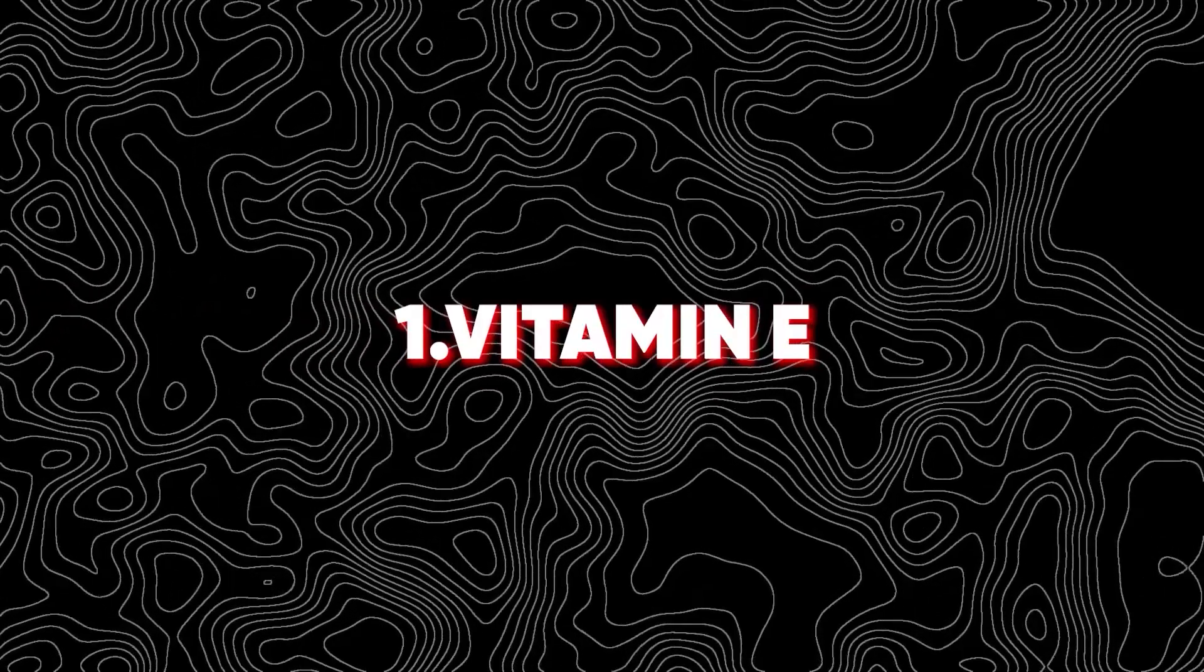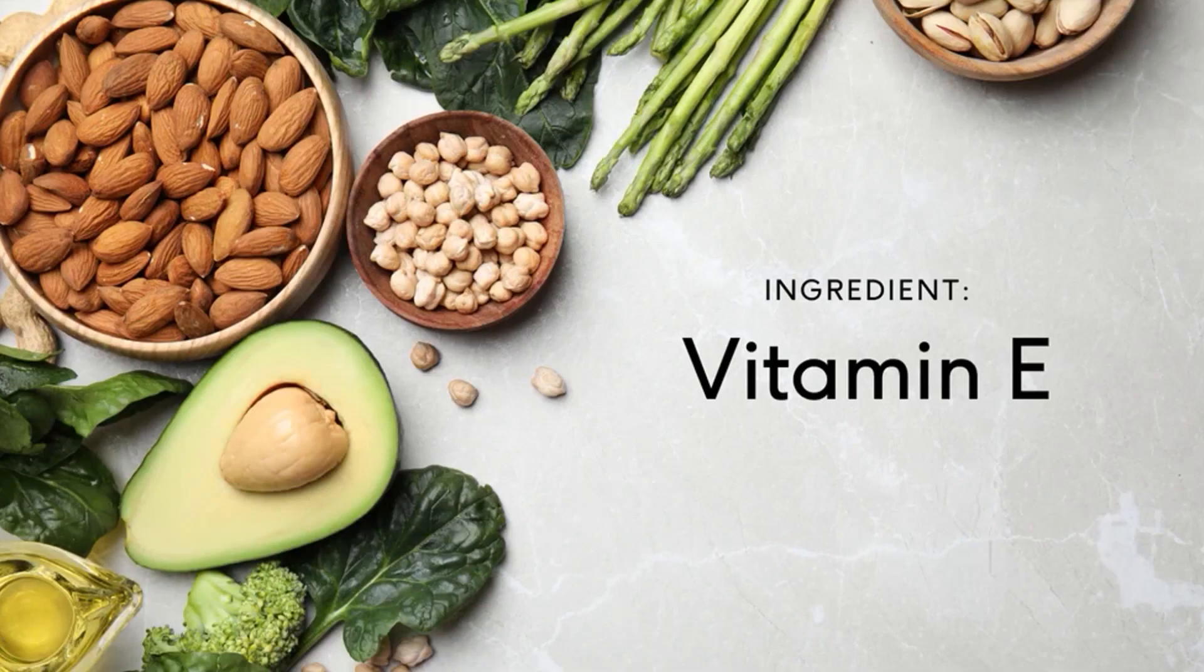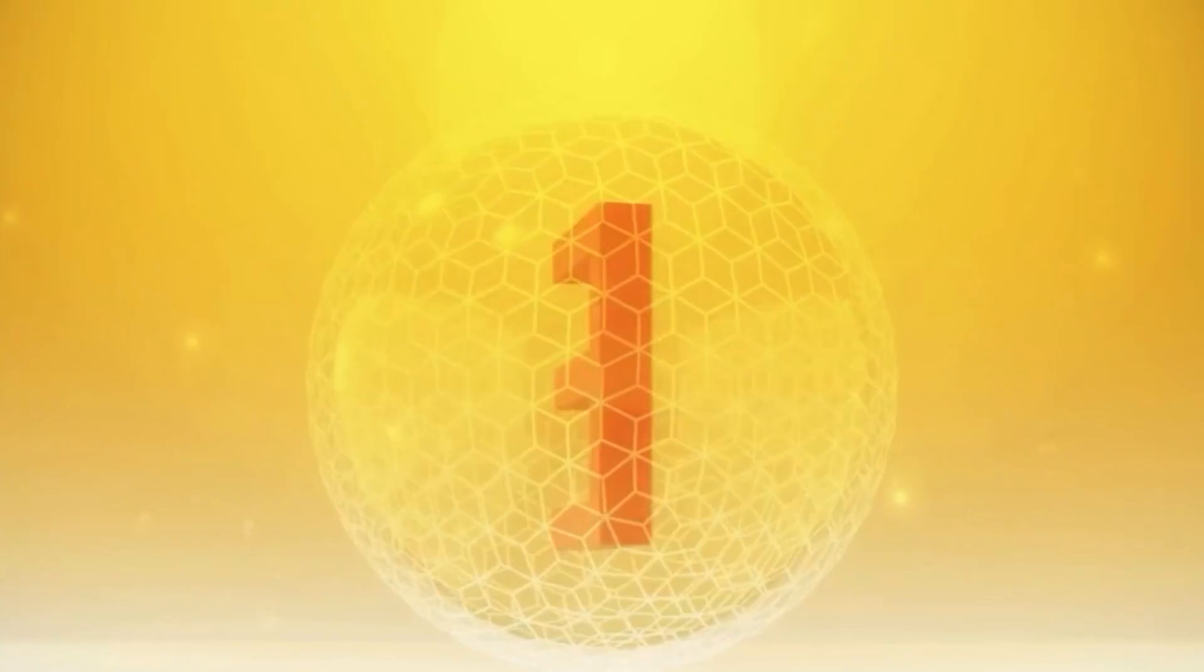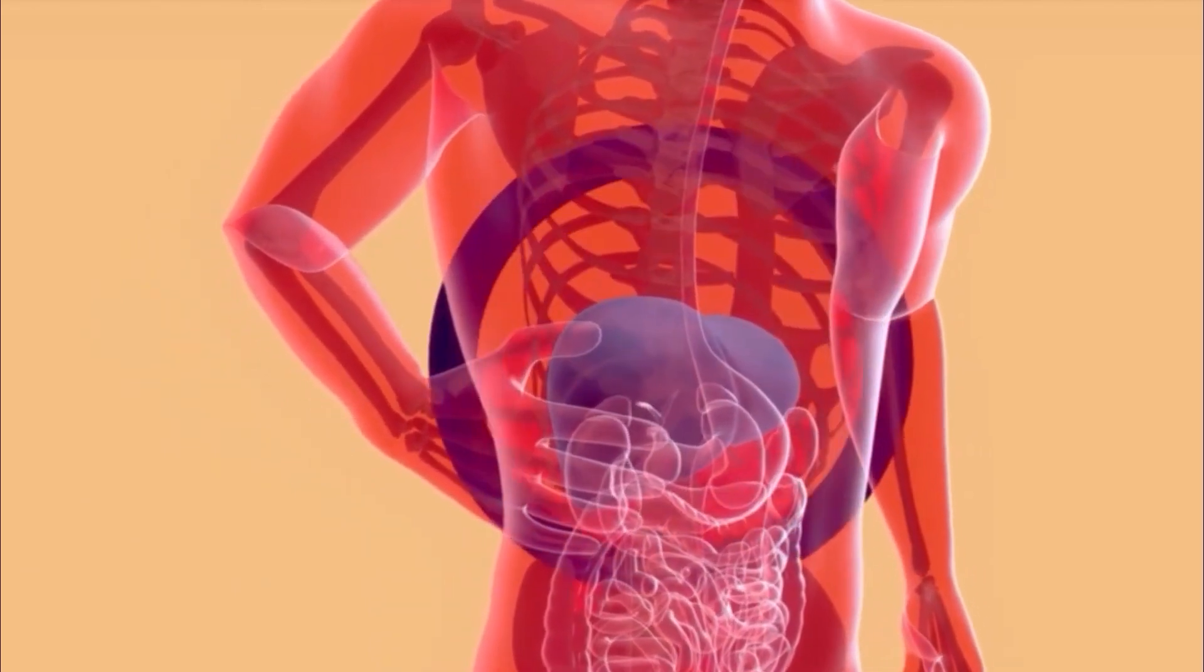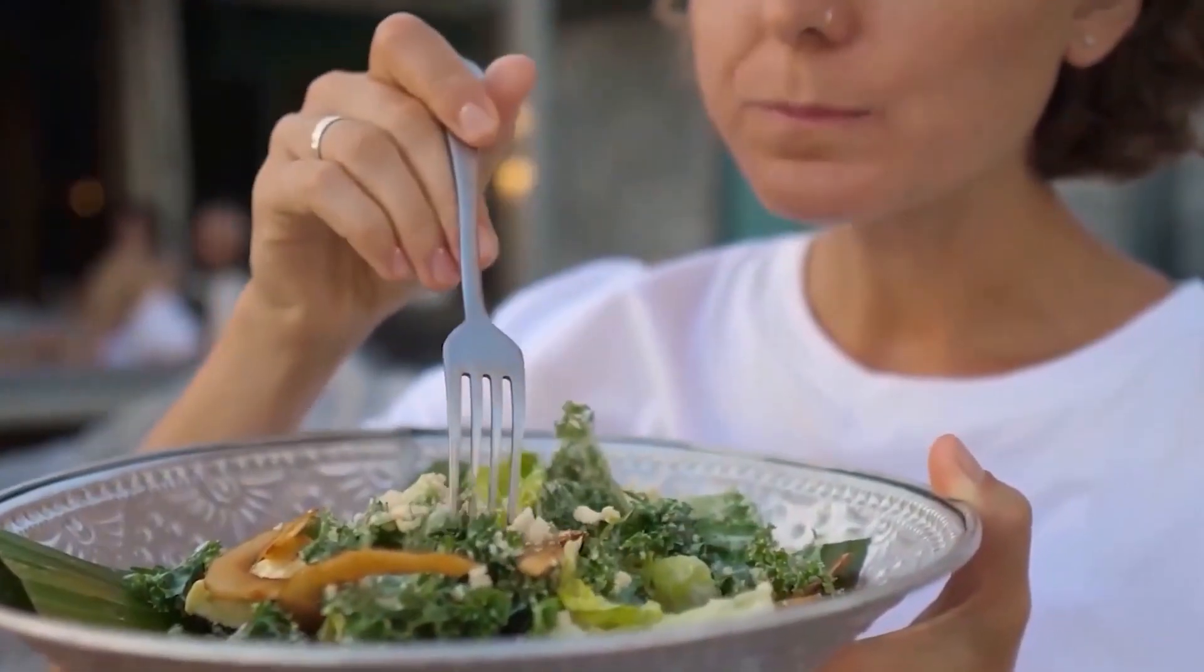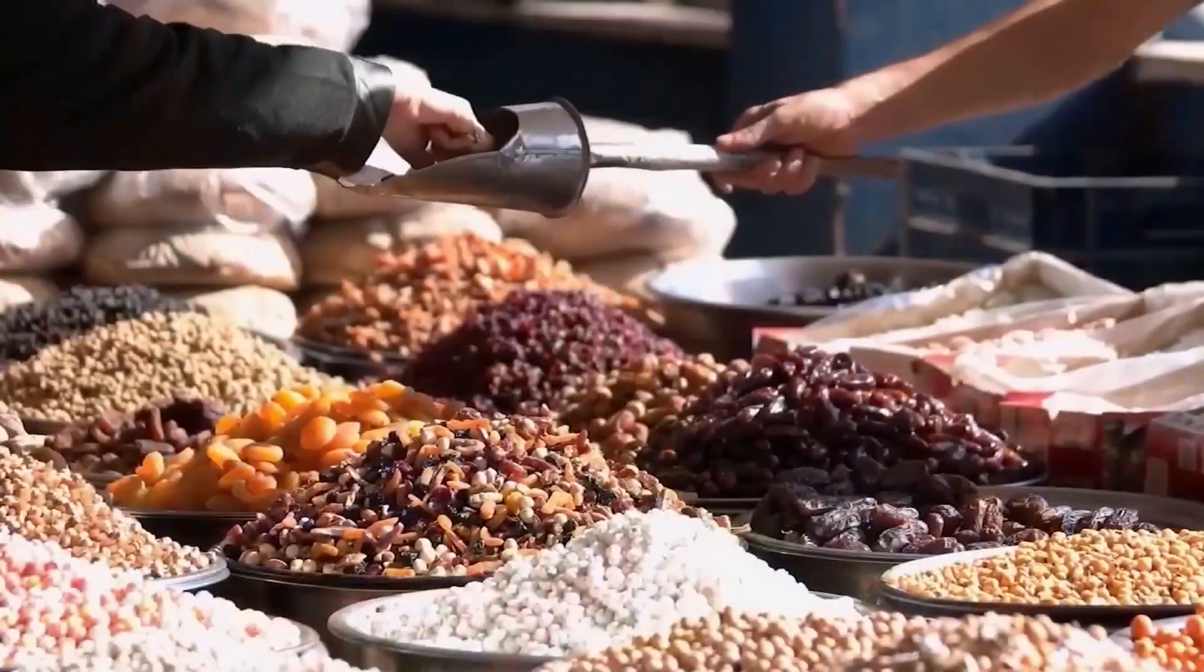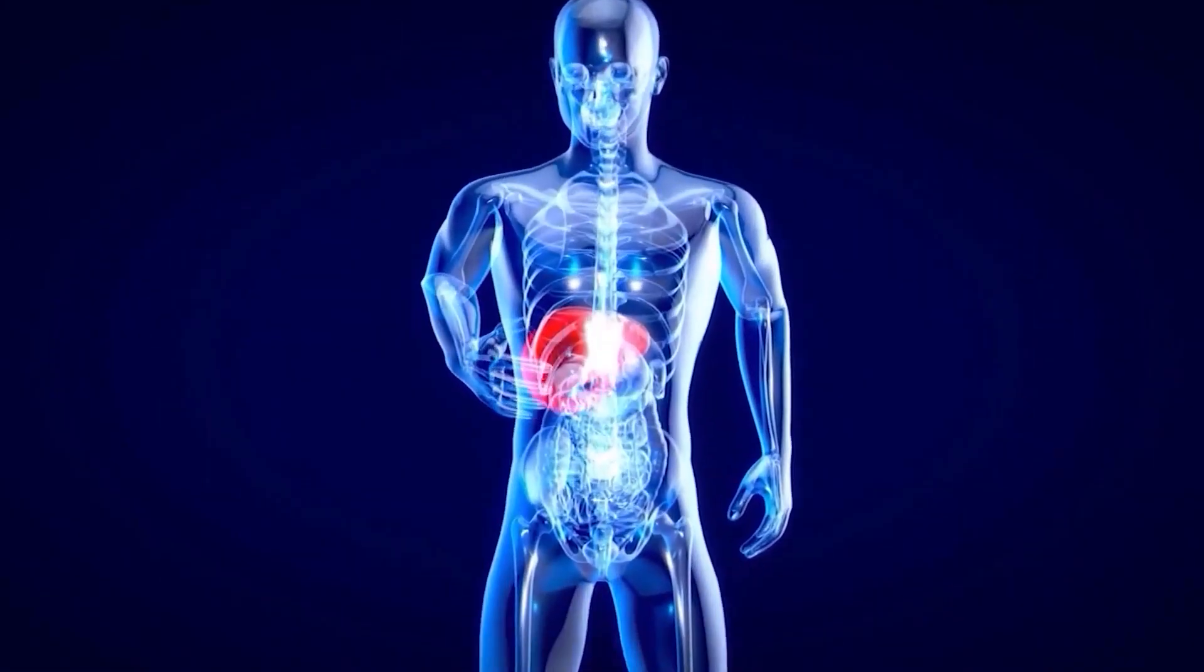Vitamin E. Vitamin E is a powerful antioxidant that helps shield liver cells from damage. It combats oxidative stress and inflammation, two major contributors to fatty liver disease. By supporting your body's defense systems, vitamin E helps to protect the liver from cellular damage and inflammation.